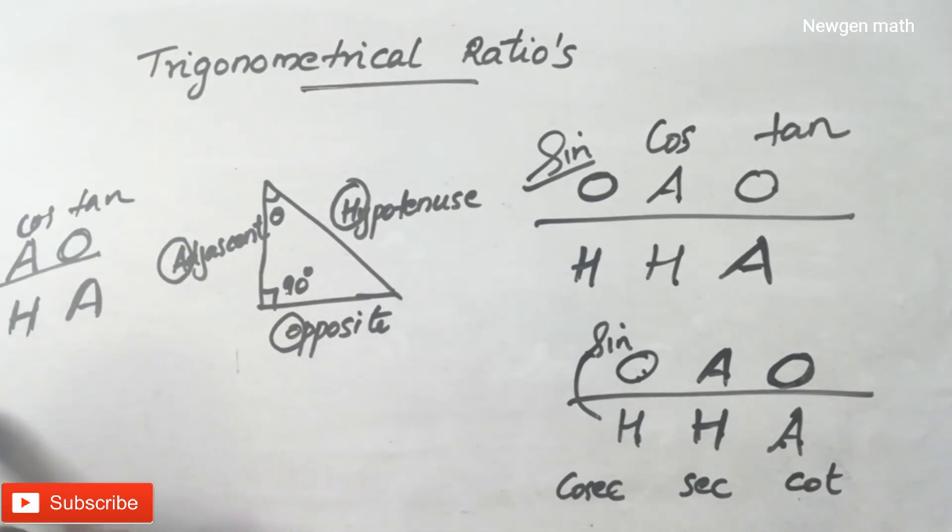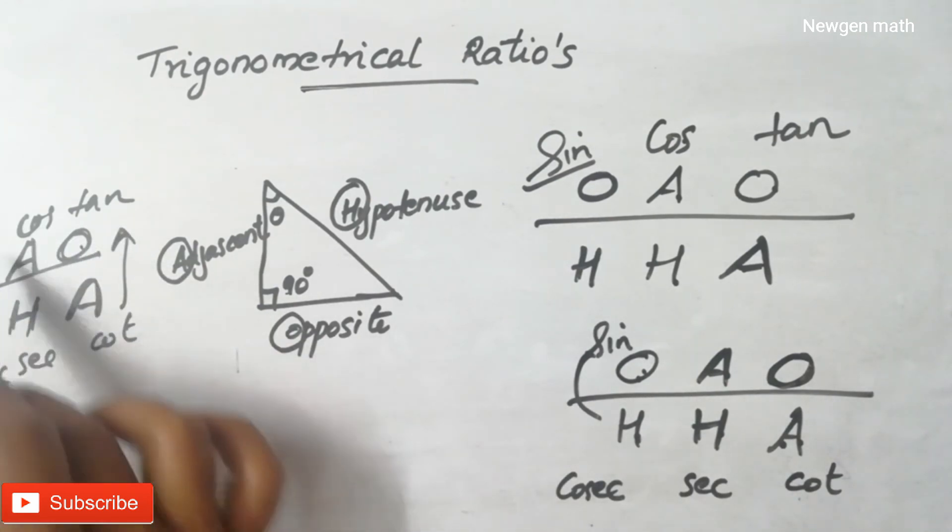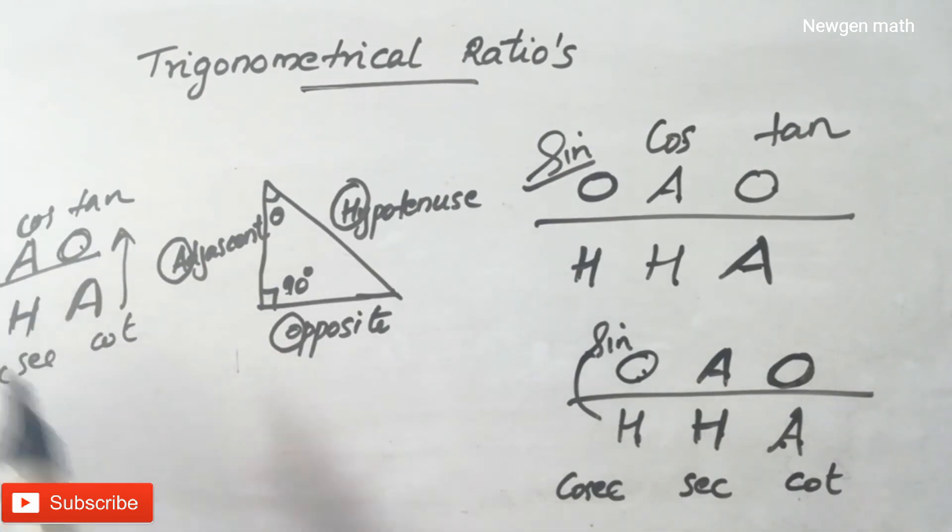Now, what are the reciprocal equations? Cosecant, secant, and cotangent. Cotangent is adjacent side by opposite. Cosecant is opposite by hypotenuse. Now, let's start with the simple method. Subscribe to the channel.